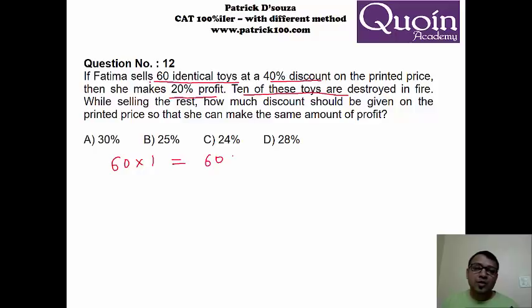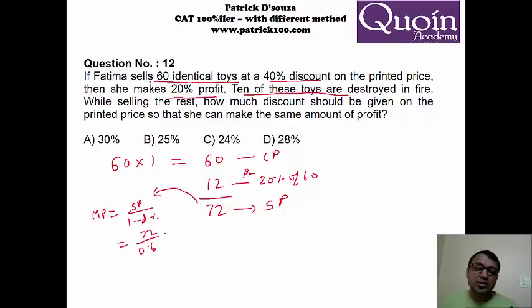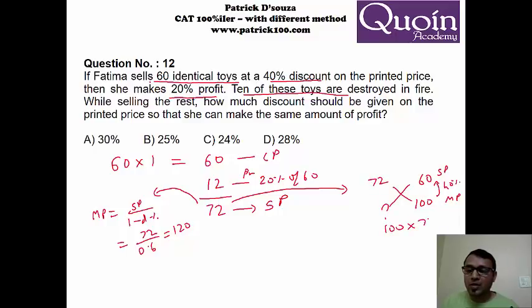Another sum. This is similar because you have a discount and a profit percent. 60 identical toys, 40% discount and 20% profit. Ten out of this toy is destroyed. So we can assume that 60 toys are each of 1 rupee. So it becomes 60 rupees. But she makes a profit of 20%, so profit of 20% is 12 because 20% of 60 is 12. So the selling price becomes 72. Now I want the mark price. 72 you got after giving a 40% discount.